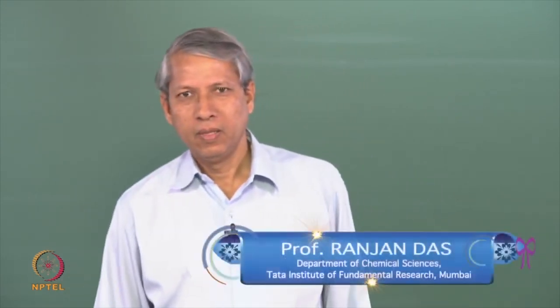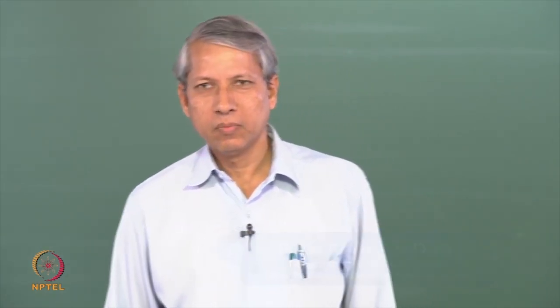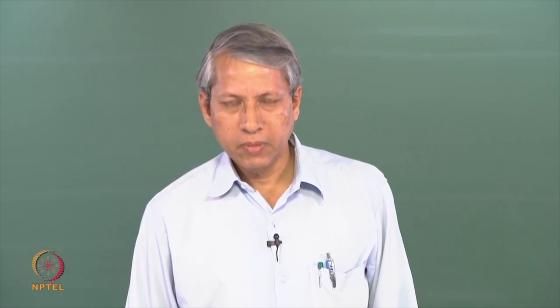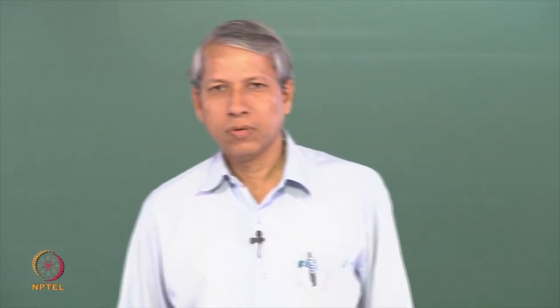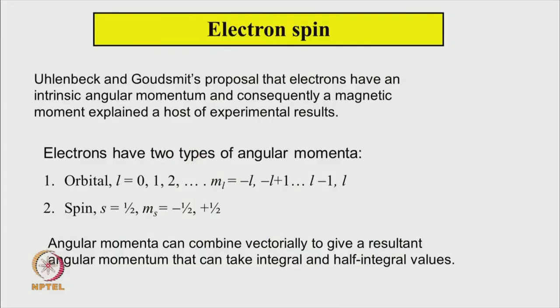Hello there. In our last lecture, we have seen that Uhlenbeck and Goldsmith made a very bold proposition that the electron has an intrinsic angular momentum called electron spin angular momentum, and that explained a host of experimental observations. So, now an electron can have two types of angular momentum: orbital angular momentum and spin angular momentum.